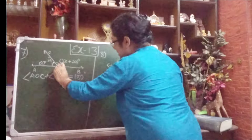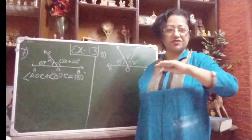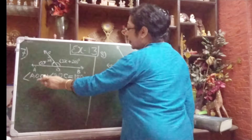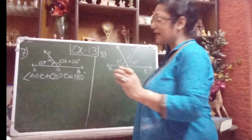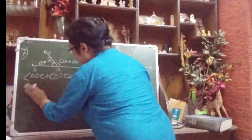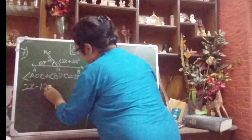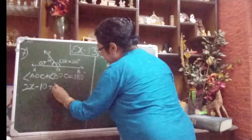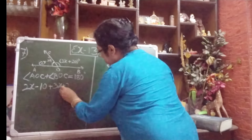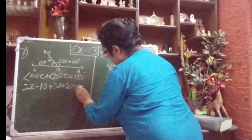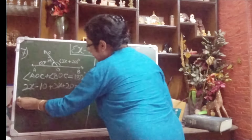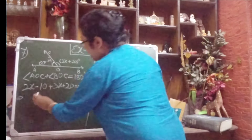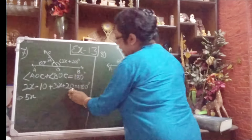We can understand this is a straight angle — the full angle gives us 180 degrees, so this is also 180 degrees. Now, angle AOC equals 2x minus 10 degrees, and angle BOC equals 3x plus 20 degrees. Writing the equation: 2x minus 10 plus 3x plus 20 equals 180 degrees.